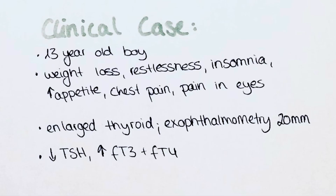In the last part, let's look at a clinical case. A 13-year-old boy goes to his GP office. He complains of weight loss, restlessness, insomnia, increased appetite, chest pain, and pain in the eyes especially upon attempt of closing them. General examination reveals an enlarged thyroid gland and protrusion of the bulbus out of the orbita. Exophthalmometry reveals a measurement of 20 mm. Laboratory results show a decrease in TSH and significant elevation of FT3 and FT4.